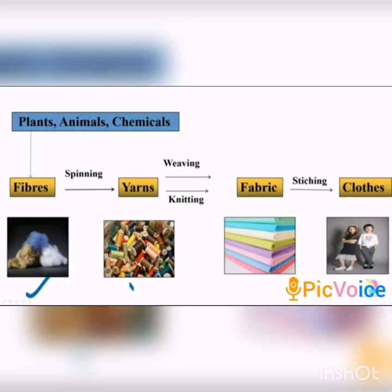The yarns are further made up of fibers. If we separate a yarn, it gives thin strands. Those thin strands are called fibers. The thin strands of yarn that we see are made up of still thinner strands called fibers.